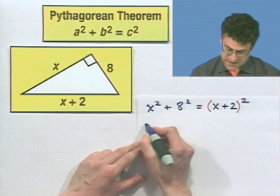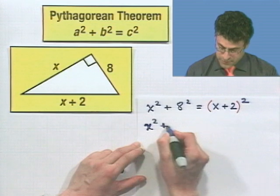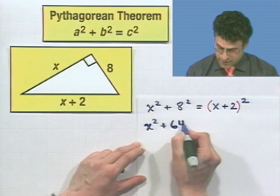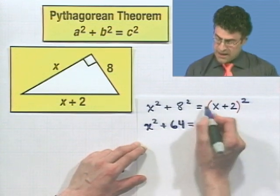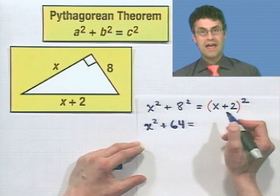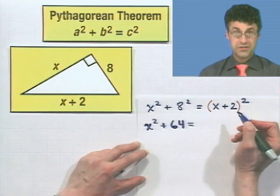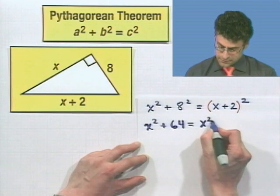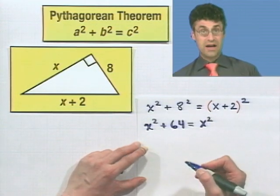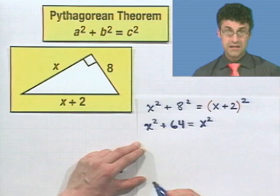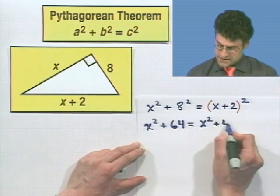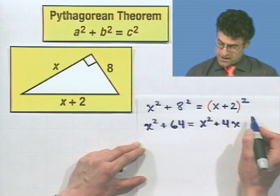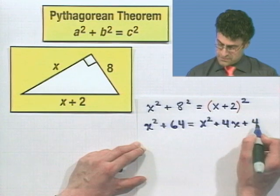if we work this out, I see X squared plus eight squared is 64. And what does that equal? Well, now I have to actually FOIL and multiply X plus two by X plus two. Well, X times X is X squared. The outside terms give me a 2X. And the inside terms give me a 2X. So when I add them together, I get a 4X. And then two times two is, of course, four. And so I'm left with this.